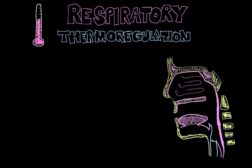So what is thermoregulation? It is basically the process by which our body modifies the temperature and the moisture content of the air that we breathe. This is important for homeostasis — the way that our body maintains an internal stable state. Our body likes to maintain a constant temperature of 98.6 degrees, which is the temperature at which it functions best. We don't always find ourselves in an external environment that is 98.6 degrees, so our body has ways to maintain that internal temperature, and thermoregulation is one of them.